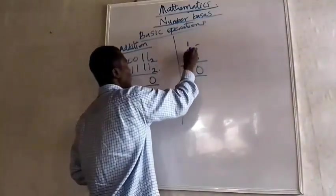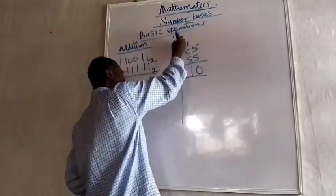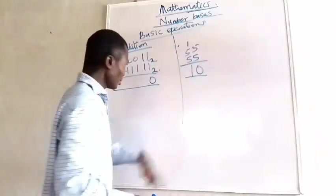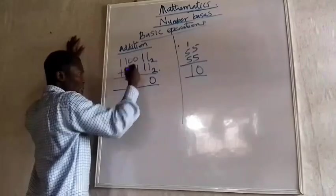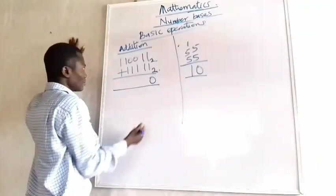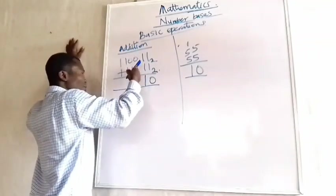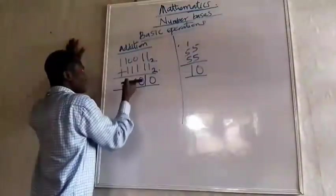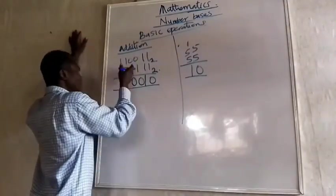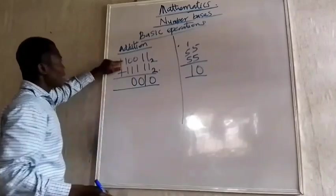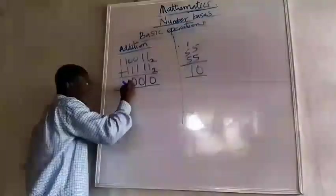Continuing: 1 plus 1 gives 2, and the result is 10 under base 2, so I write 1 and carry 1. Coming here, 1 plus 1 plus 1 is 3, which is 11 under base 2, so I write 1 here and carry 1. That 1 makes 2 again, giving 10, so I write 0 and carry 1. Again 1 plus 1 plus 1 is 3, which is 11 under base 2, so I put 1 here and carry 1.